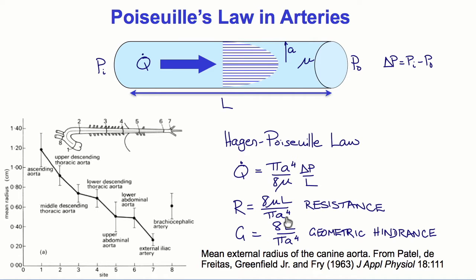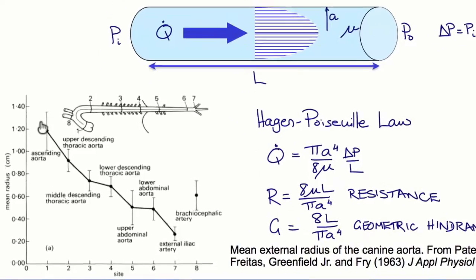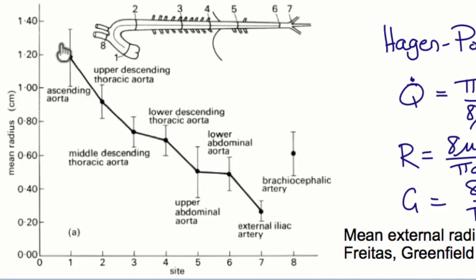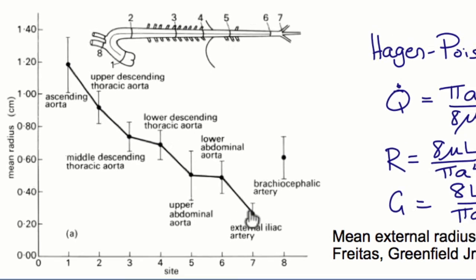There's a very high dependence of resistance on radius and a large increase as the radius decreases. Looking along the aorta, you can see that the diameter of the aorta, here shown for a dog, decreases substantially from the top of the aortic arch down to the iliac branch. Each time there's a branching vessel, the aortic diameter decreases. And so as a consequence, going down the aorta, there's a significant increase in flow resistance.